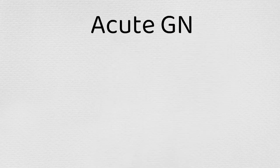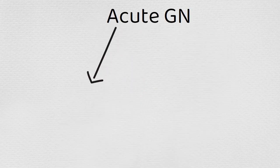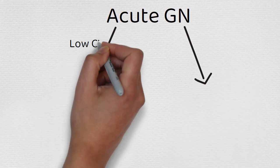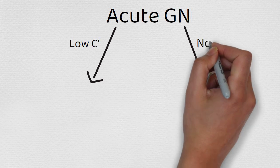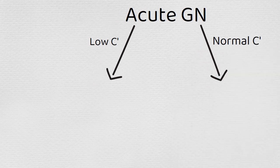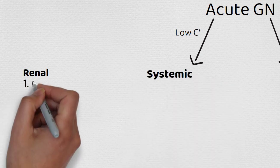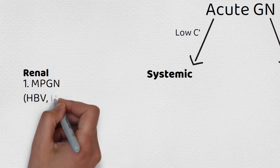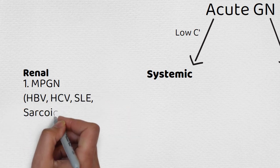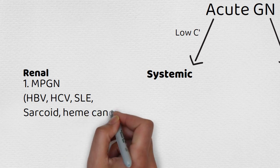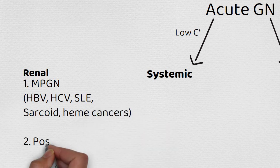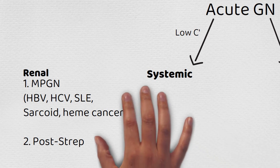Acute glomerulonephritis can be classified into two categories: low complement or normal complement. On the low complement arm, we have renal limited diseases and systemic diseases. With renal limited, we have membranoproliferative glomerulonephritis — usually secondary to hepatitis, lupus, sarcoid, and heme cancers — and second, post-strep GN, which, weirdly enough, is what they think Mozart actually died from at a young age.